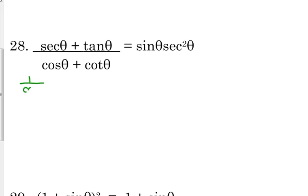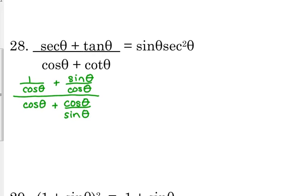So secant is 1 over cosine. Tangent is sine over cosine. Cosine is already in its terms, so we need that. Cotangent is cosine over sine. Somehow we've got to turn all that into sine of theta times secant squared of theta. So anybody got any ideas?